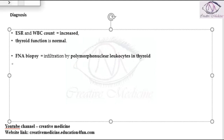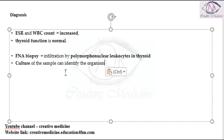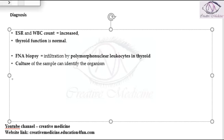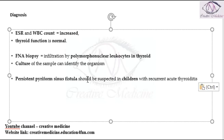Culture can be done mainly to identify the causative organism. If the patient has a persistent pyriform sinus — especially in children — you should always suspect recurrent acute thyroiditis.